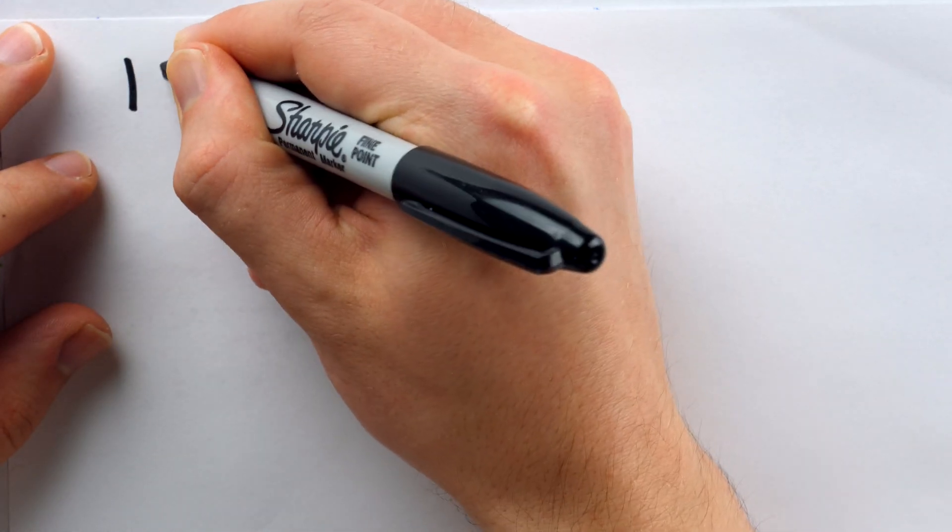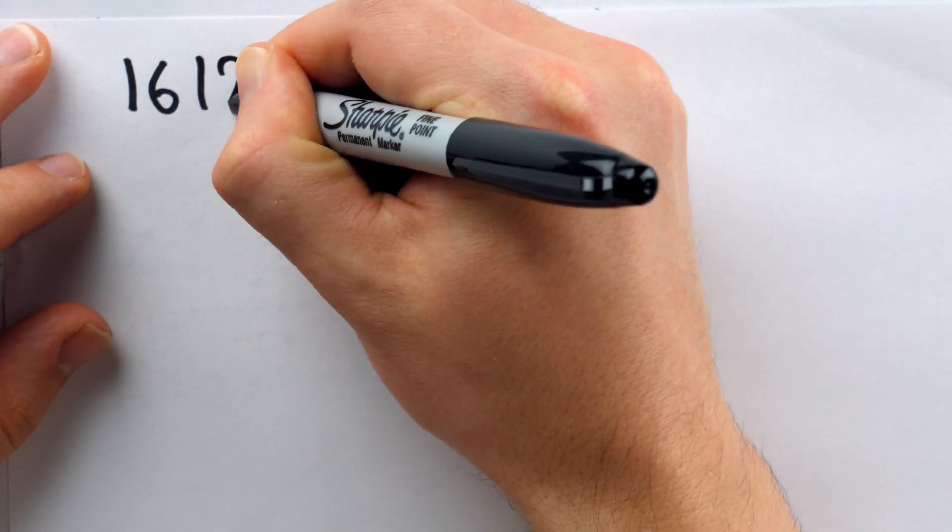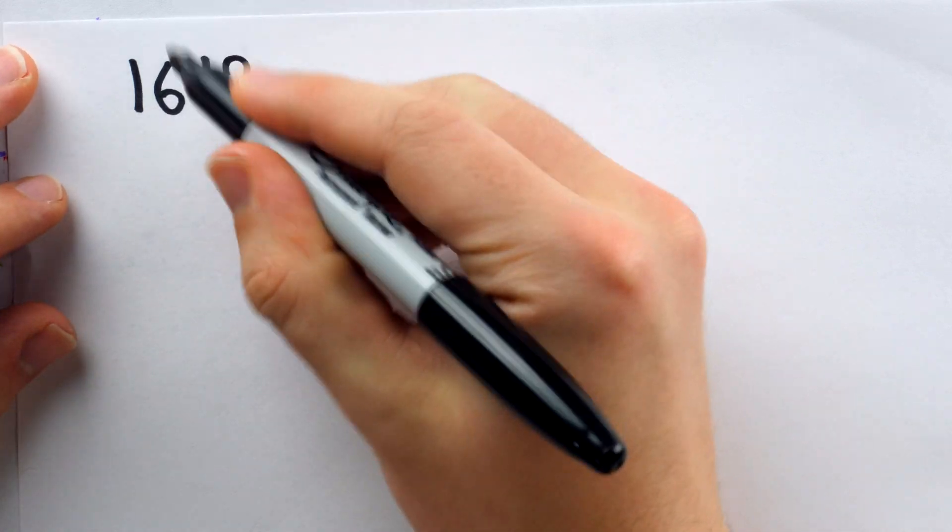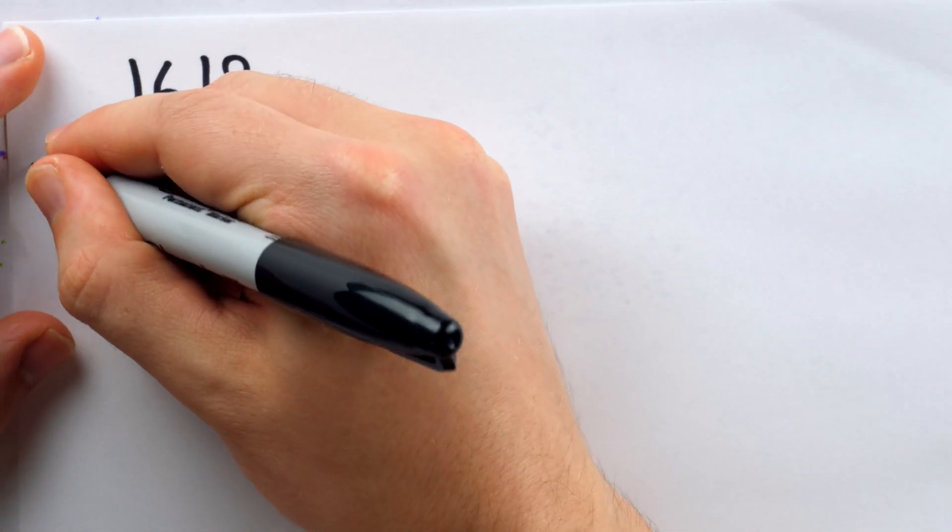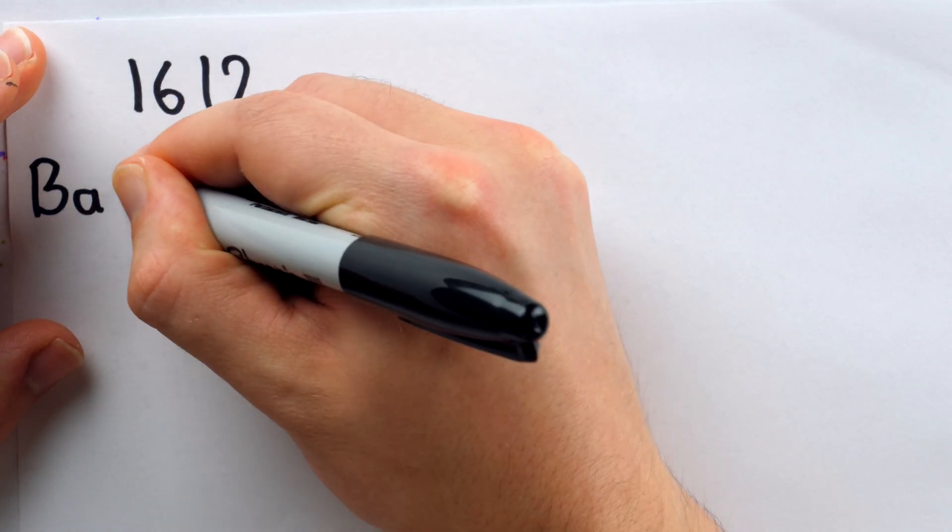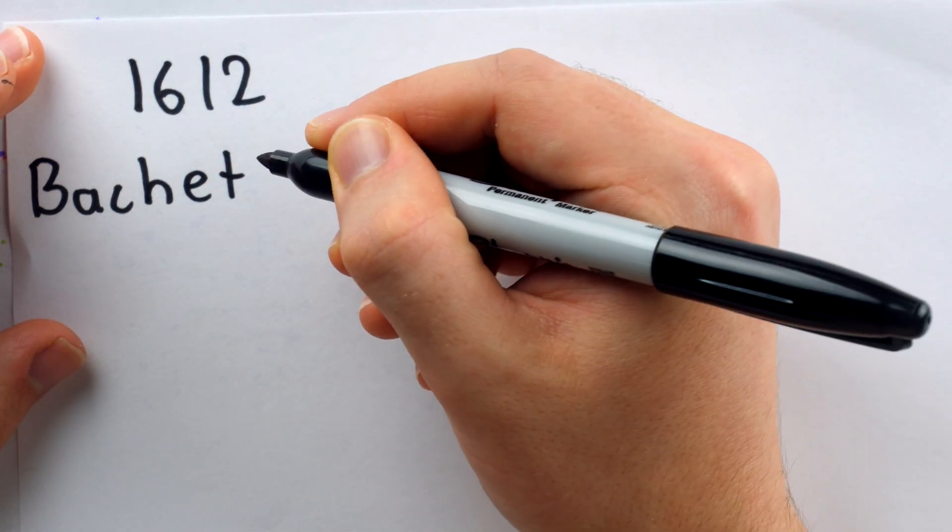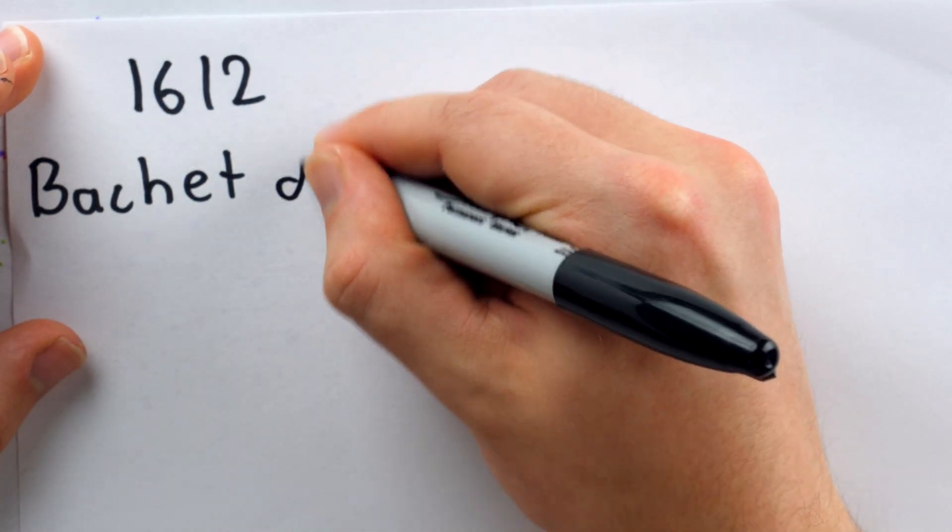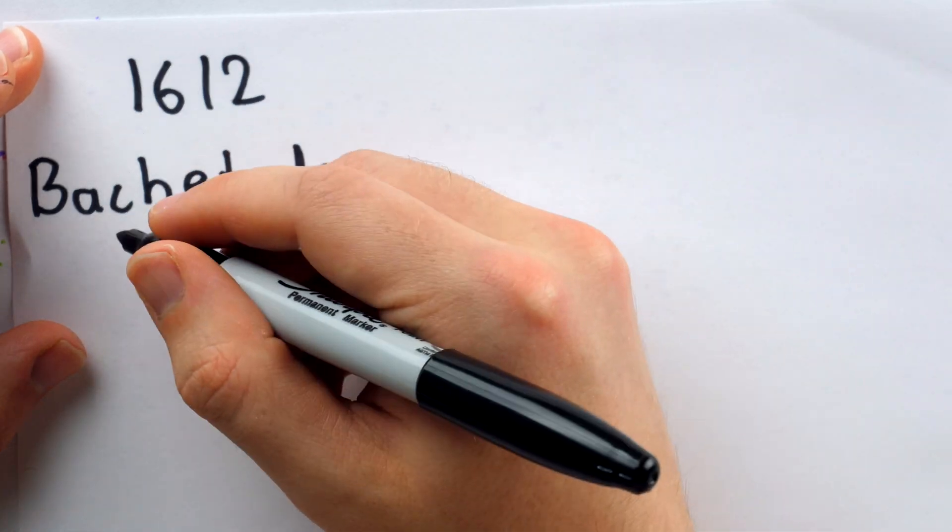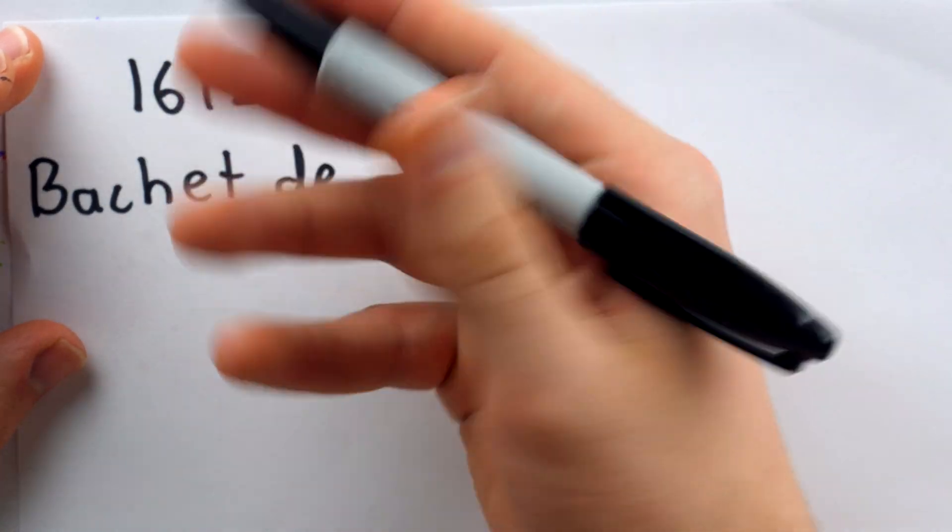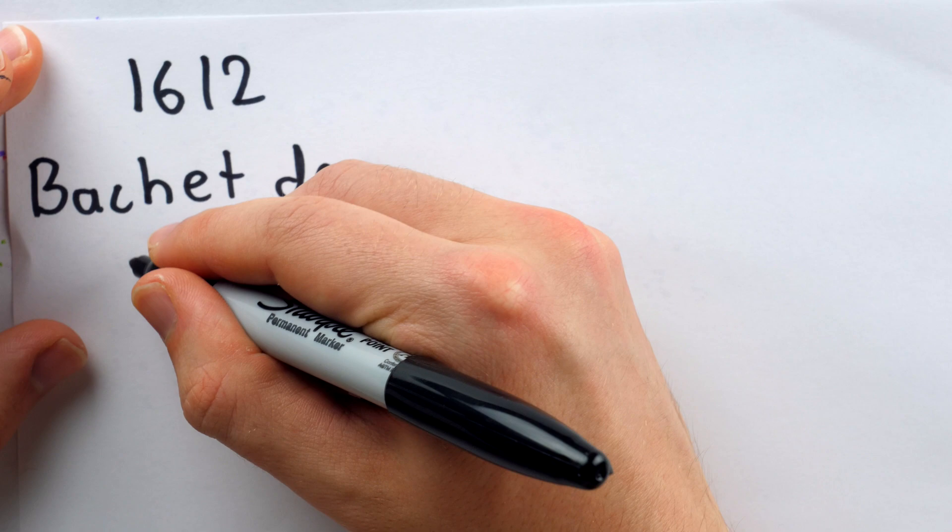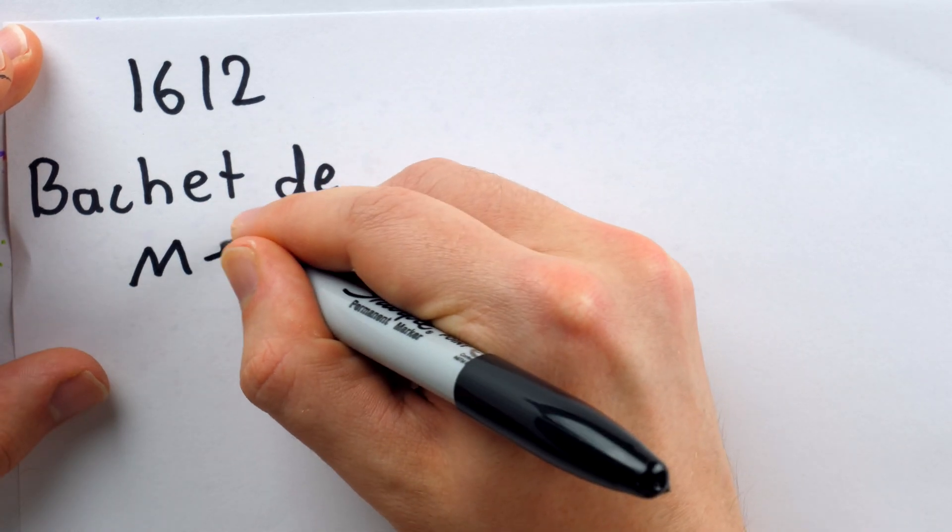I hope you're ready to learn about a thrilling combinatorial game. The year is 1612, and a French mathematician by the name of Bachet de Méziriac, I don't know exactly how to pronounce that, but I gave it my best try.